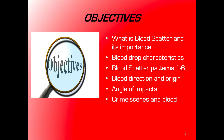We'll also look at the physics of blood droplet characteristics and the six main spatter pattern types. Sometimes they're not as clear-cut as just one type — it could be a combination of several spatter patterns. You'll get an intro to determining the direction that blood was traveling and its origin, which is a fancy way of saying where it came from, as well as the angle of impacts. Blood is a very useful piece of information and we'll look at some of the tools investigators use.